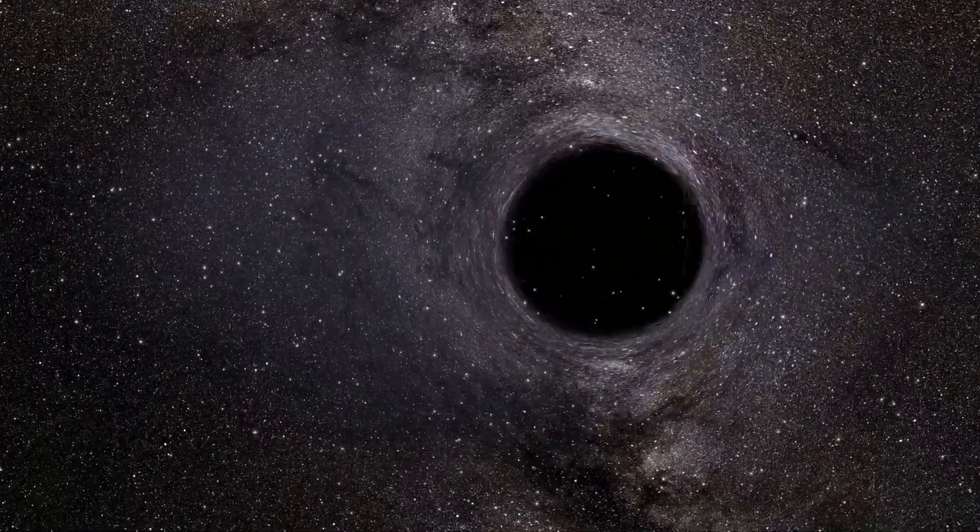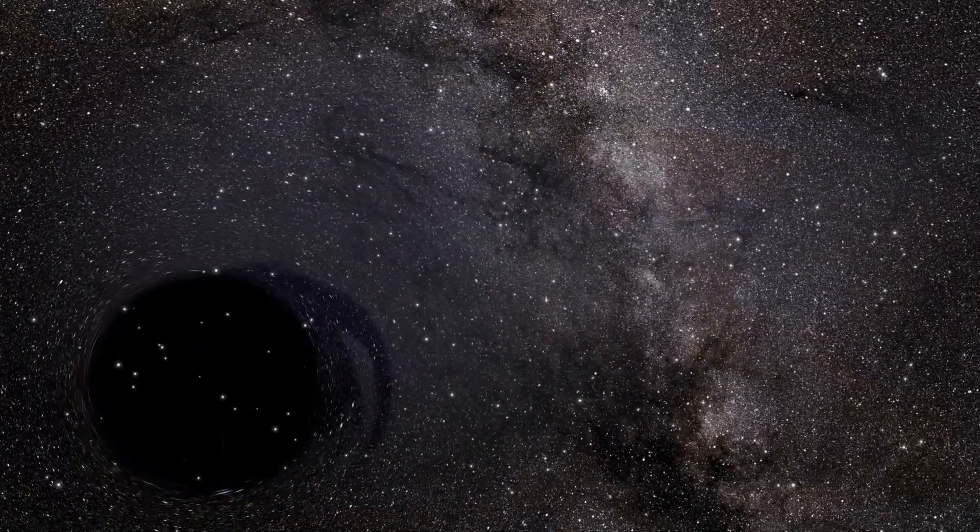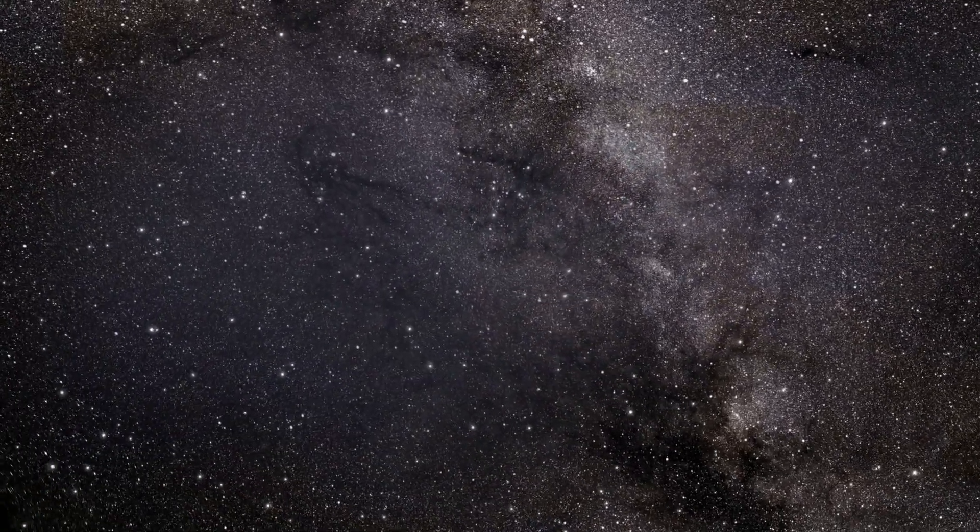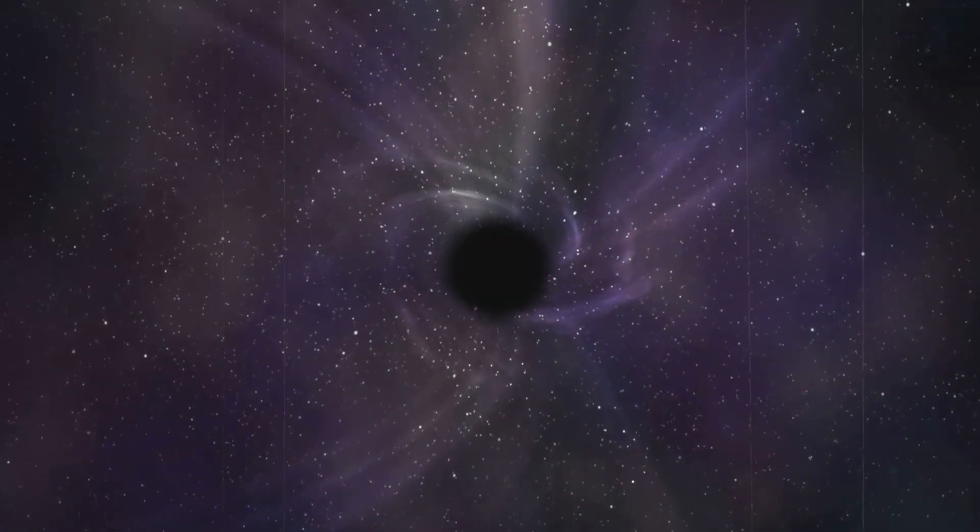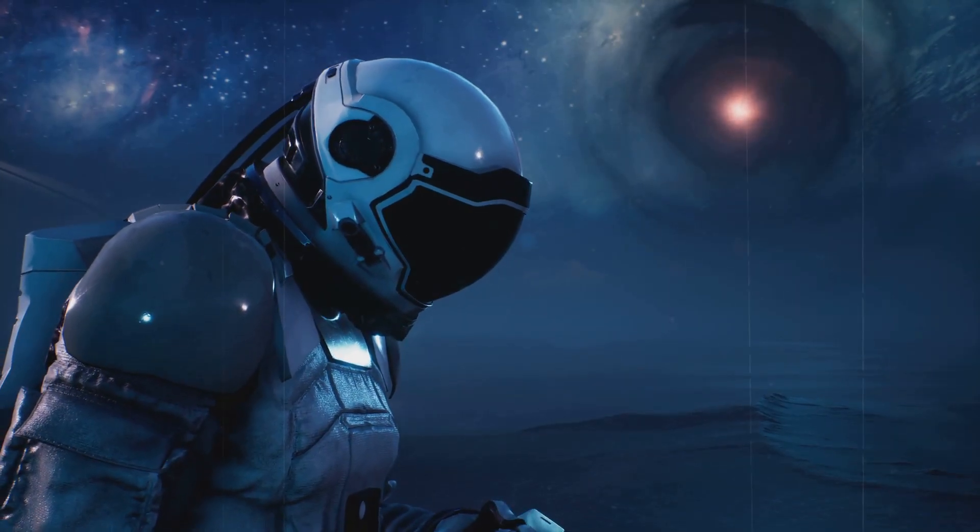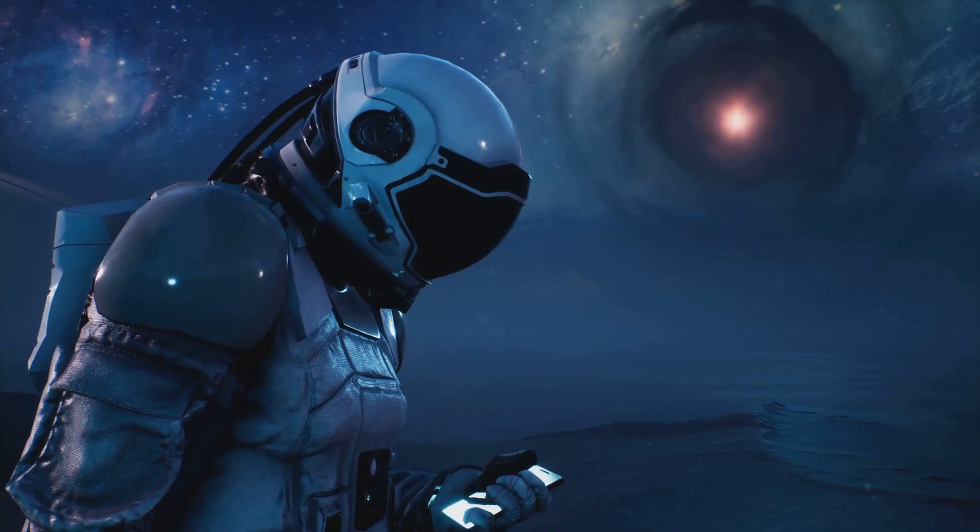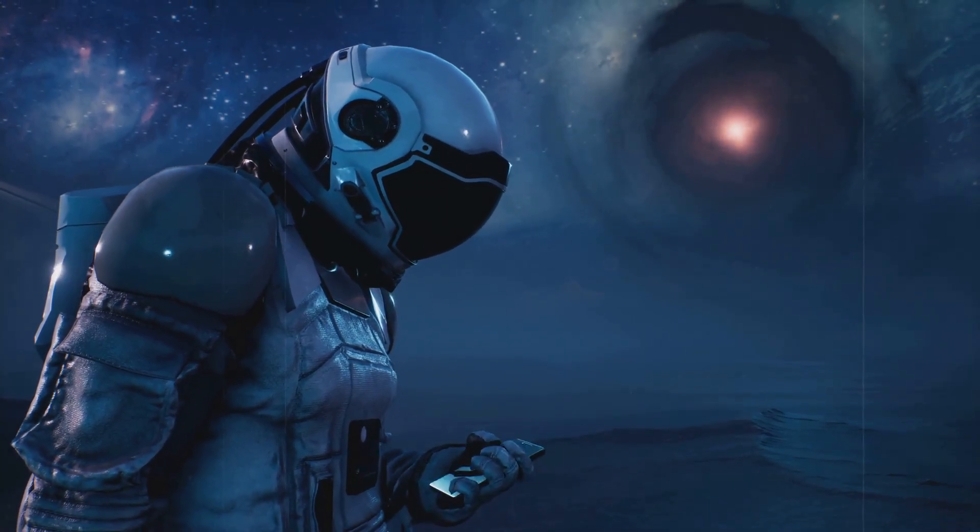Imagine a void so dense, so powerful, that not even light can escape. We're talking about black holes. Recent observations have revealed something even more unsettling. A rogue black hole drifting through the Milky Way. Unlike supermassive black holes, this rogue travels alone, a cosmic wanderer with an insatiable appetite.